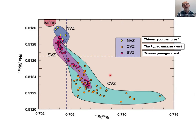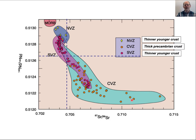Here's a neodymium versus strontium plot. MORB is up here, and where you have very thin crust — the northern and southern volcanic zones — compositions tend to be much closer to MORB, closer to the original mantle. But when you get into the central volcanic zone, which has really thick Pre-Cambrian crust, you see isotopic mixing. These are mixing arrays between an original mantle-derived melt and continental material that's down here, possibly even farther over to the right for strontium.